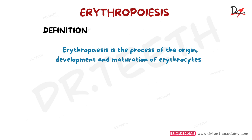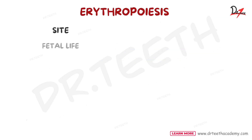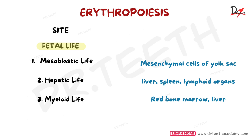Erythropoiesis occurs at different sites during different phases of life. We'll see how these sites vary during fetal life, in newborn babies, adults and children. In fetal life, erythropoiesis occurs in three different periods at three different sites. First is the mesoblastic stage, which is during the first two to three months of intrauterine life, where RBCs are produced from the mesenchymal cells of the yolk sac.